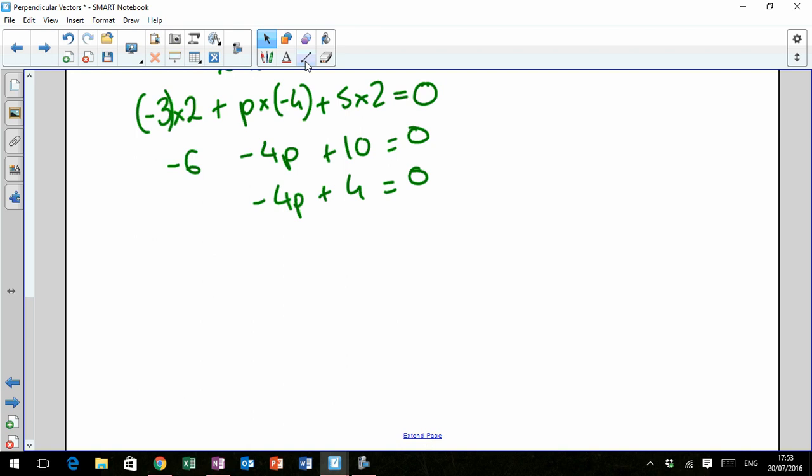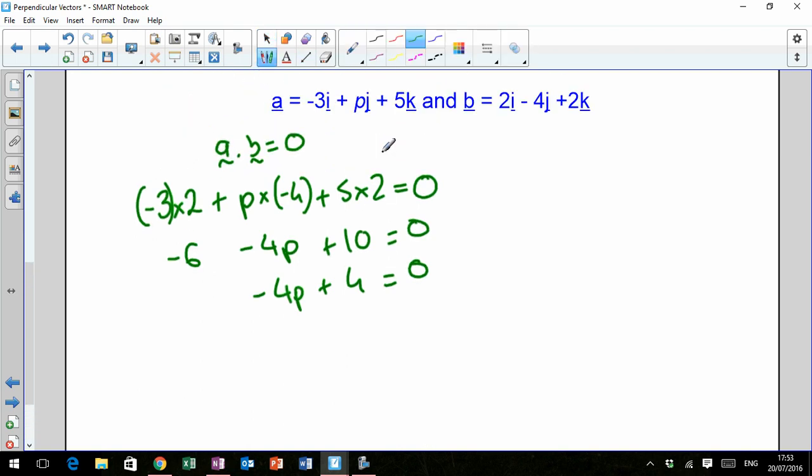That's negative 6, minus 4P, plus 10 equals 0. So that's just a mistake there. And that means that negative 4P add 4 is equal to 0. Then if you add 4P to both sides there, just to keep it positive, which means that 1 is equal to P.